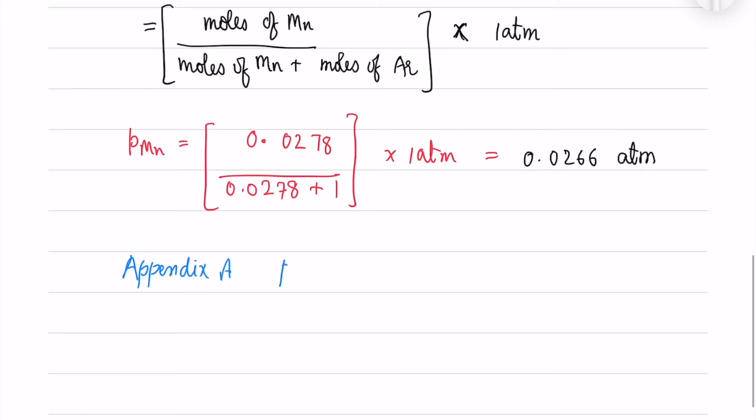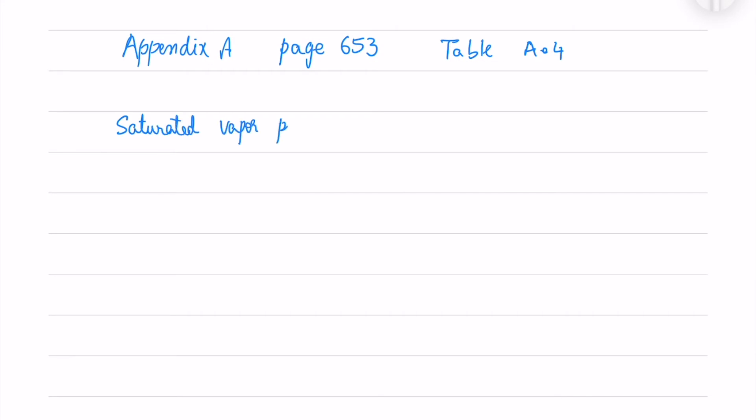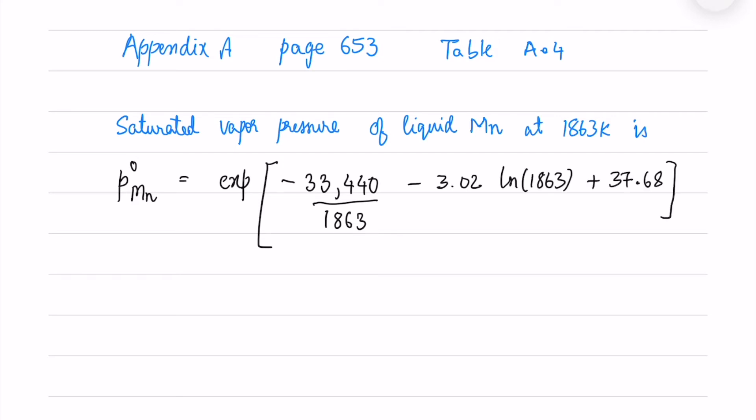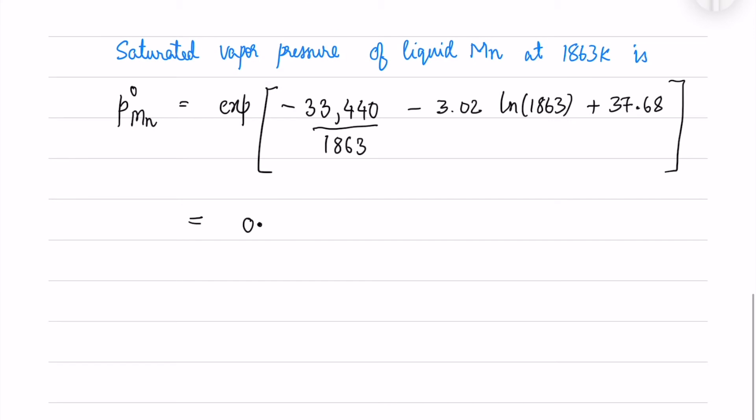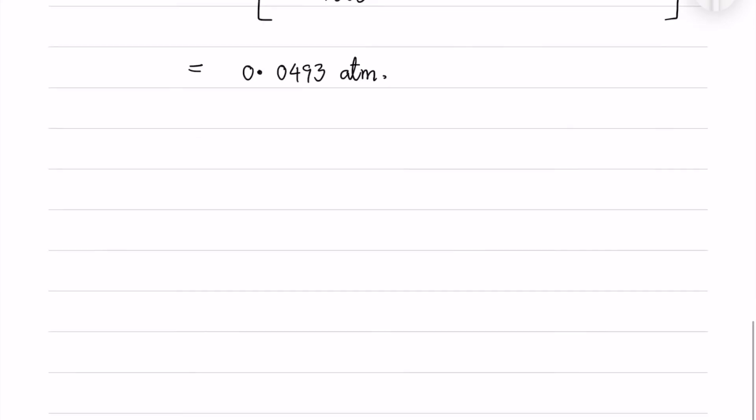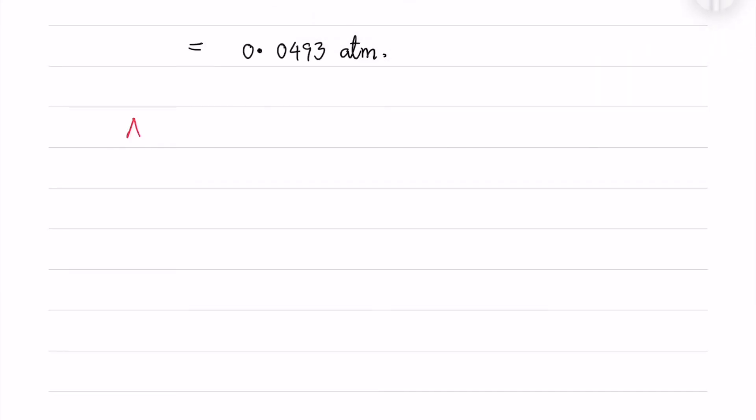As we have seen in Appendix A page 653 table 8.4, we will get the saturated vapor pressure of liquid manganese at 1863 Kelvin. We will use the formula. We will take the exponential of A/T minus B plus C. That would be around 0.0493 atm.